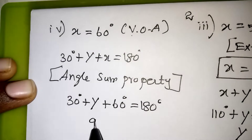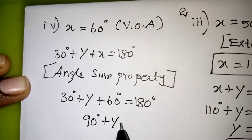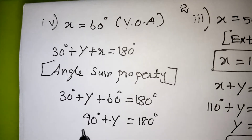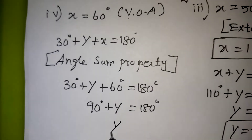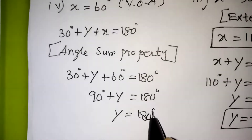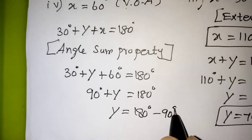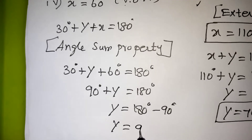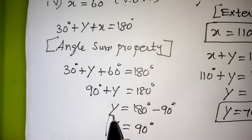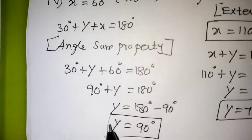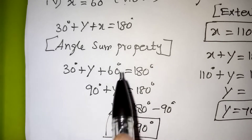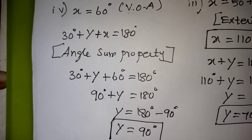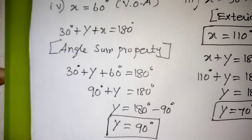30 plus 60 is 90, so 90 plus y equals 180 degree. Bringing plus 90 to the other side gives minus 90, so 180 minus 90 equals 90. Therefore y is equal to 90 degree — that is your correct answer. x value we already got, which is 60 degree. We will move on to the next problem now.